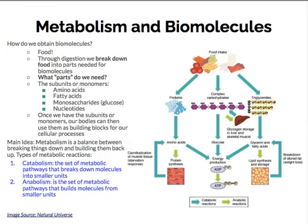How do we obtain biomolecules? The simple answer is we eat food. Through digestion, we break down food into parts needed for biomolecules. These parts are subunits or monomers. Amino acids were the monomer of proteins, fatty acids were the subunits of lipids, monosaccharides or glucose are monomers of carbohydrates, and nucleotides are the monomers of nucleic acids. Once we have these subunits or monomers, our bodies can then use them as building blocks for our cellular processes.